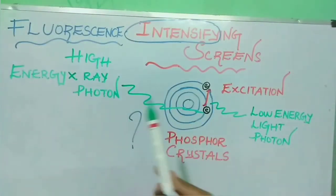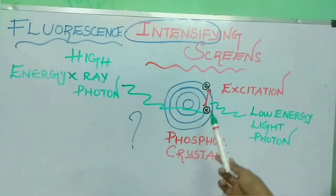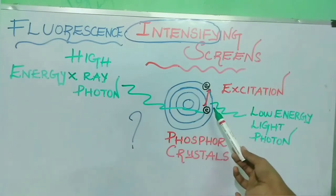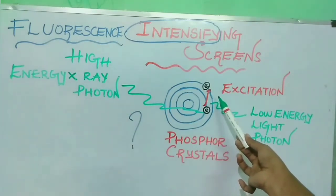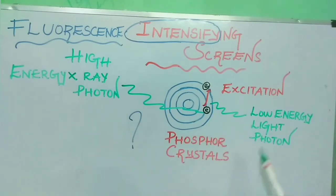How are high energy x-ray photons getting converted to low energy light photons? The main principle behind this conversion is fluorescence. When high energy x-ray photons interact with phosphor atoms there will be excitation. Excitation is the movement of an inner shell electron towards the outer shell. When this electron returns back to its original ground state there will be emission of low energy light photons. That is known as fluorescence.